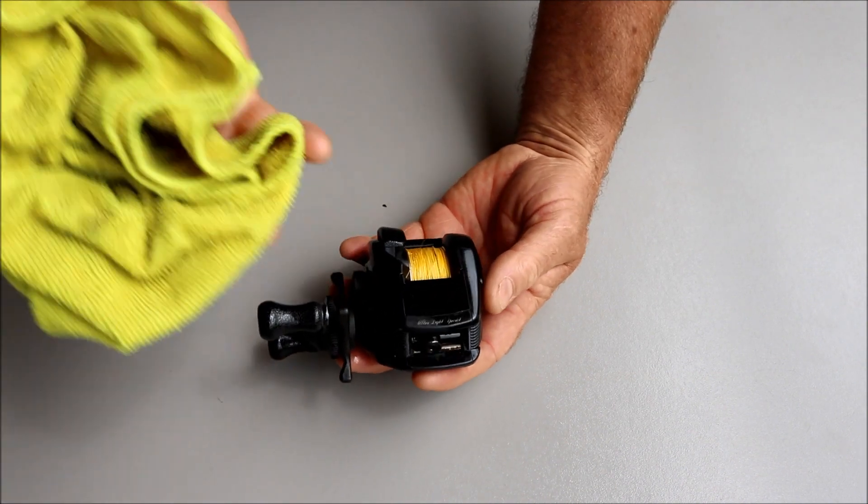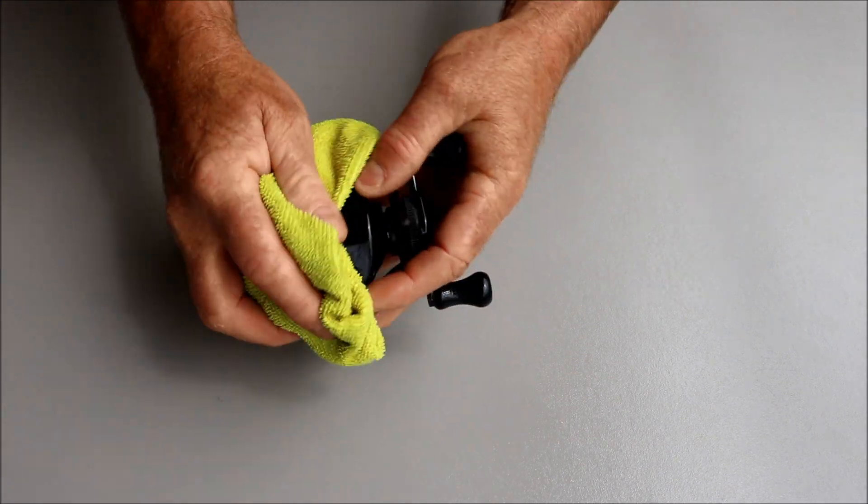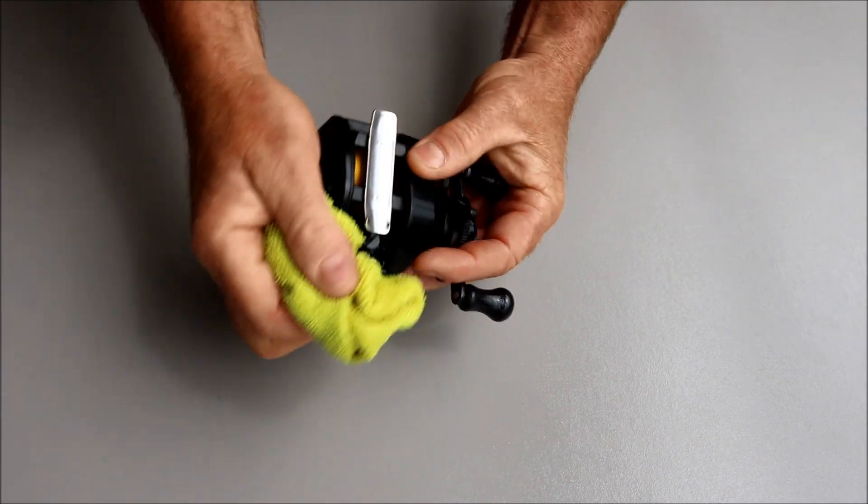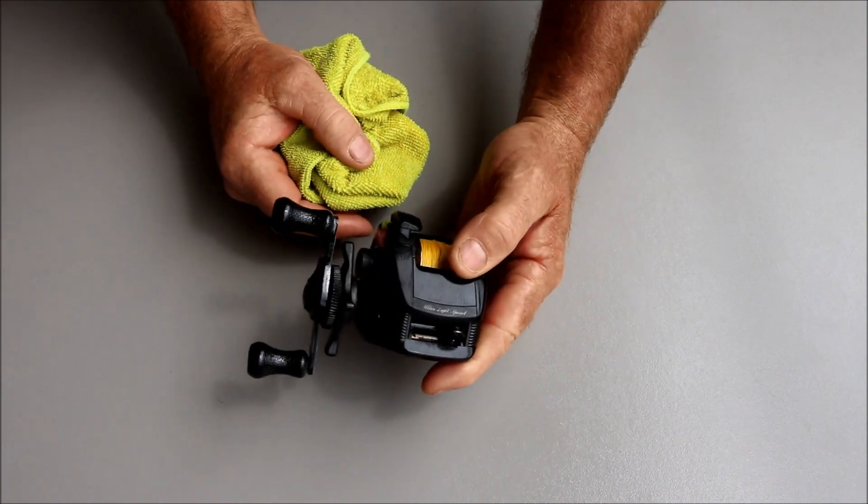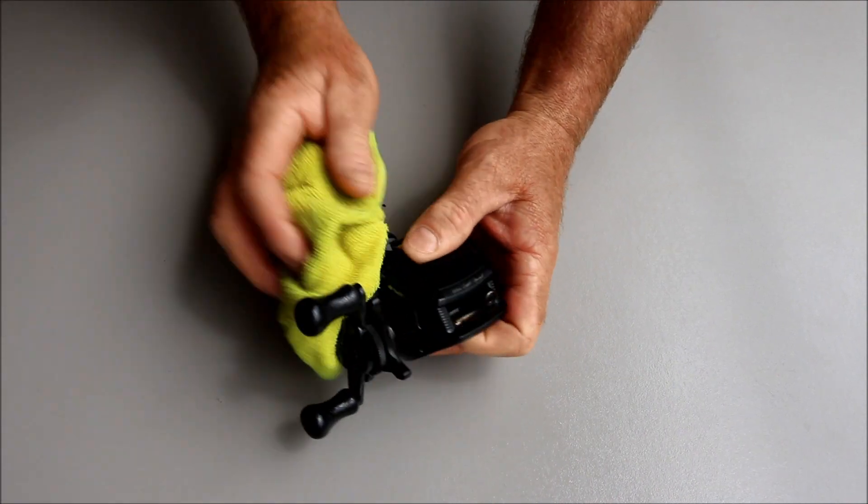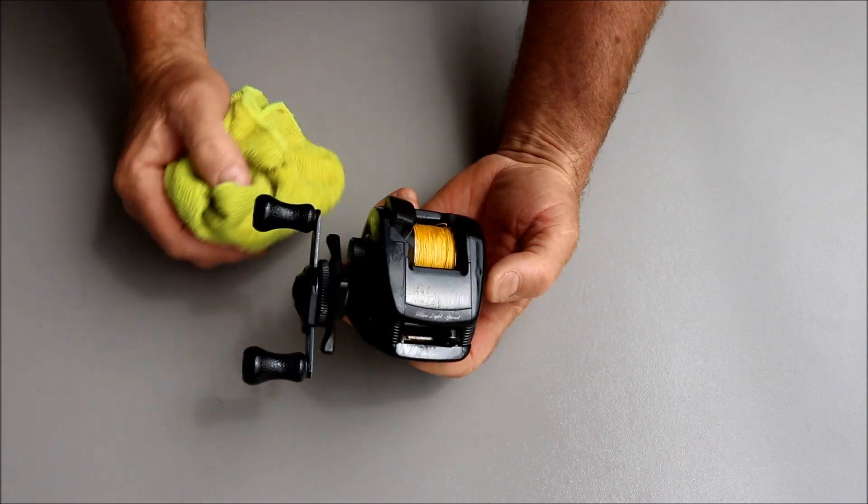The next step is to take a damp cloth that's been soaked in fresh water. All I do is just wipe my reel over. The most important thing you should never do with bait caster reels is hose them with a hose under pressure. The reason for this is all you'll do is you'll force the sand and the grit and the salt inside the reel.